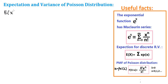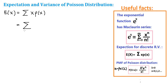The expectation for discrete random variables in general is the summation of x times the probability mass function. In our case, the PMF is lambda to the x, times e to the negative lambda, over x factorial. We're going to multiply this with x, summing x from 0 to infinity: x times lambda to the x, e to the negative lambda, over x factorial.